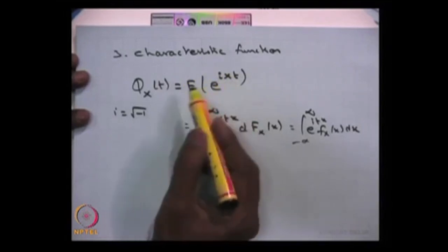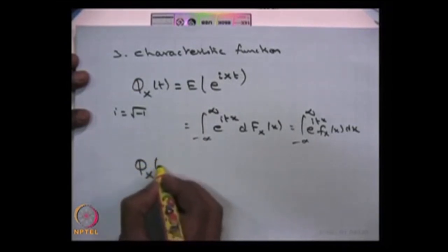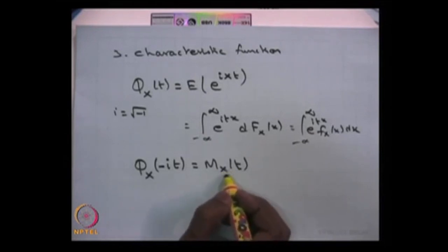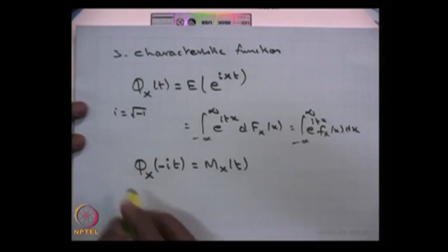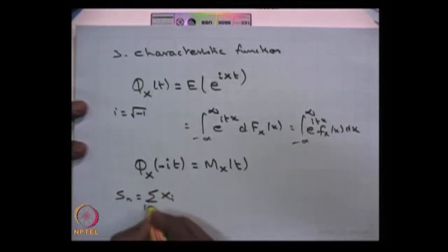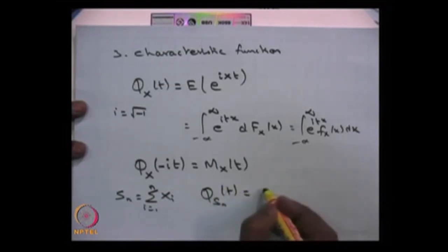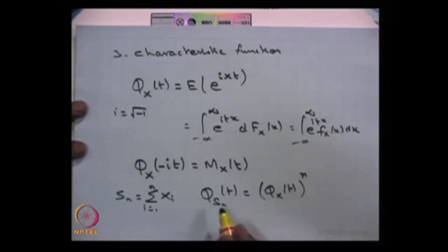The MGF may exist or may not exist for some random variables, whereas the characteristic function always exists. You can relate the characteristic function evaluated at minus i times t to the MGF of the random variable t. That means the MGF of X equals the characteristic function evaluated at minus i times t, where i is the complex quantity. Also, if you want to find the characteristic function of the sum Sn of n IID random variables, the characteristic function of Sn equals the characteristic function of each individual random variable raised to the power n. The characteristic function also has the uniqueness property: if two random variables have the same characteristic function, then they are identically distributed.